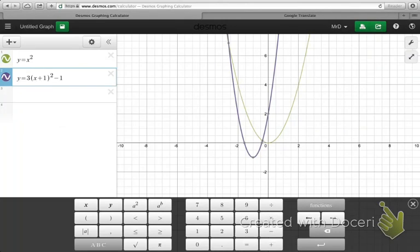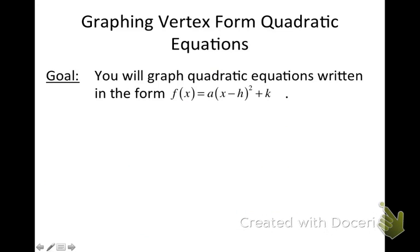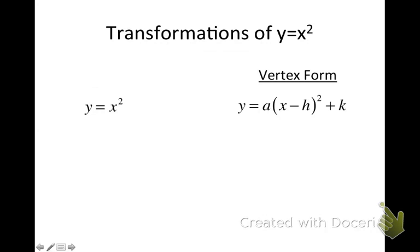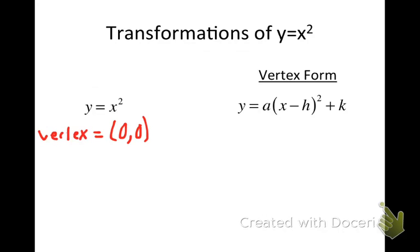Let's talk about how you can transform the graph of y equals x squared and some main properties of that graph. The graph of y equals x squared has the vertex at zero, zero — it was at the origin — and its axis of symmetry was the y-axis, the line x equals zero. Now, vertex form: whenever you have a quadratic function written in the form y = a(x − h)² + k, that's called the vertex form.